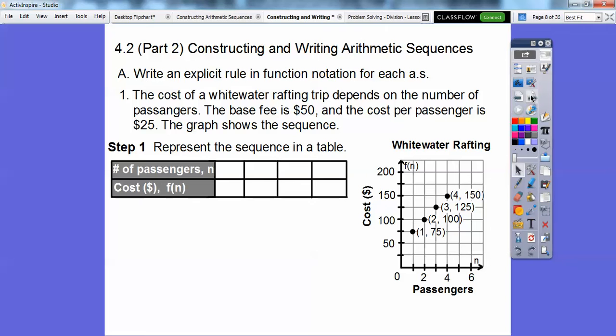Let's represent this sequence in a table. The number of passengers is our x-axis, or our n-axis right here. So the numbers are going to be 1, 2, 3, 4. And then the cost is going to be these numbers, how high it goes up: 75, 100, 125, and 150.